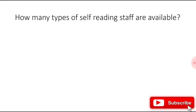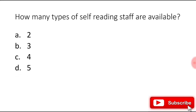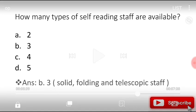How many types of self-reading staffs are available: two, three, four, or five? The right answer is three. They are solid, folding, and telescopic staffs.